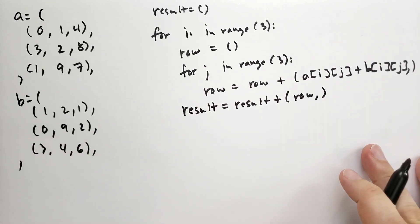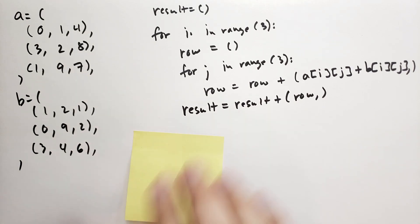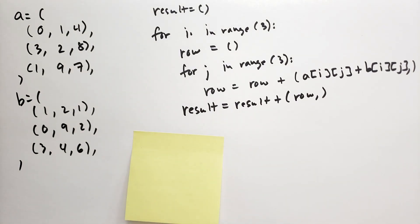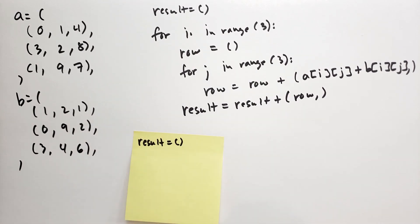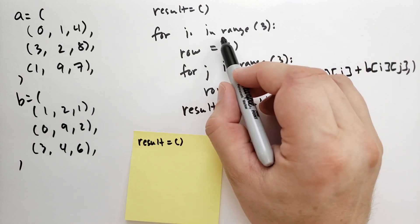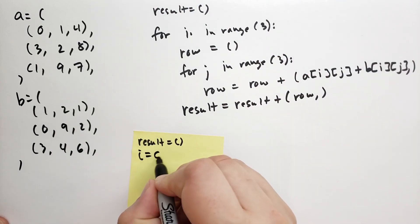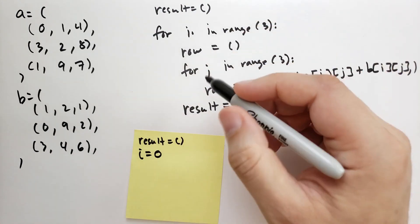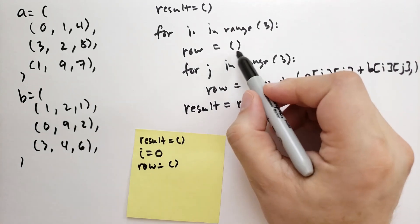Let's walk through this code quickly. At first, result equals the empty tuple. For i in range(3), the first value is 0, so i equals 0. It executes the inner for loop, and row is set to the empty tuple.